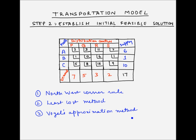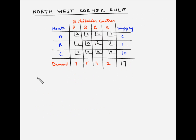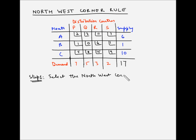Now let us understand the steps involved in finding out the basic feasible solution using the northwest corner rule. In the northwest corner rule, the first step is to select the northwest corner square as the starting point.